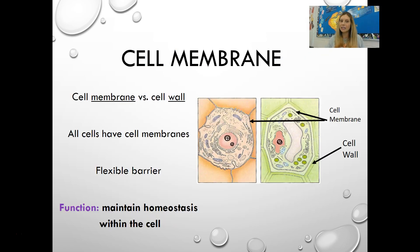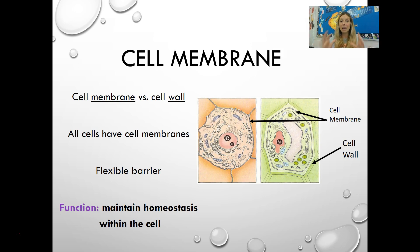We have to start by talking about a really important structure: the cell membrane. Let's quickly review the difference between the cell membrane and the cell wall. Not all cells have cell walls, but all cells have cell membranes. Even cells that have cell walls, like plant cells, have the cell wall on the outside and the cell membrane still acting as a barrier just inside that. The cell wall's job is to provide structure and support, but it's still the cell membrane's job to control what goes in and out of the cell.